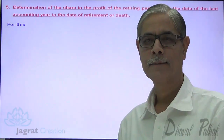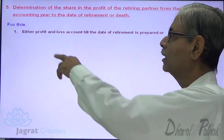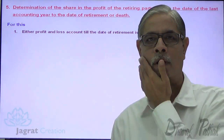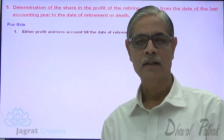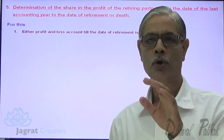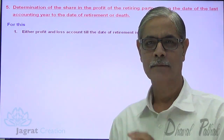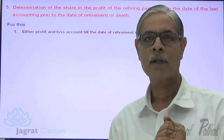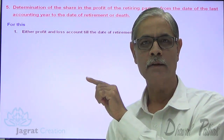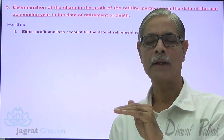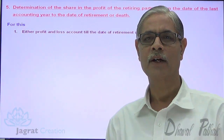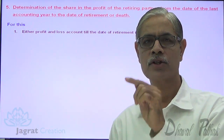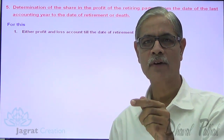For this, either a profit and loss account till the date of retirement is prepared. Suppose a partner retires on 30th April 2011 — then you have to prepare a trading profit and loss account from 1st January 2011 to 30th April 2011. So, prepare the trading and profit and loss account for four months, find out the profit, and give a share in that profit to the retiring partner.